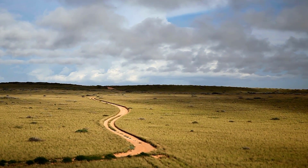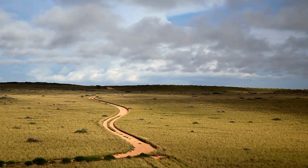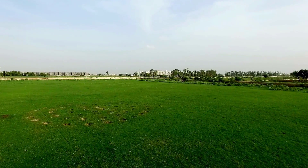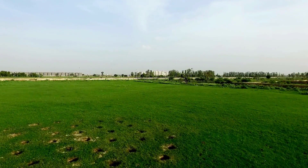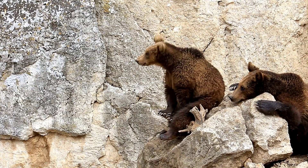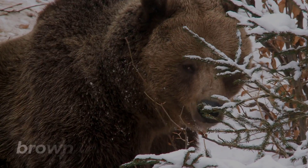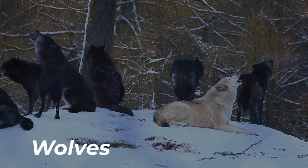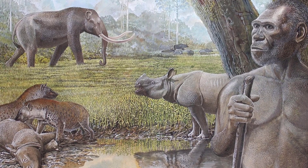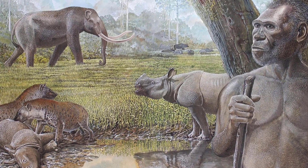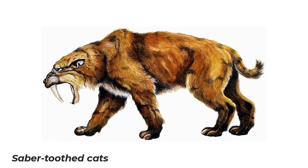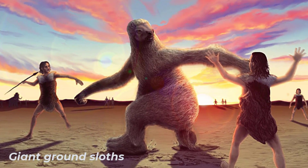Steppes or dry grassy plains were common. Savannas or warmer grassy plains were also present, as were deserts. Many animals that lived during the ice age would be familiar to you, such as brown bears, caribou, and wolves. There was also megafauna that became extinct at the end of the ice age, such as mammoths, mastodons, saber-toothed cats, and giant ground sloths.